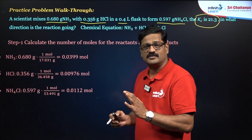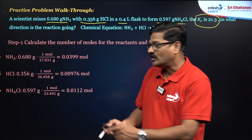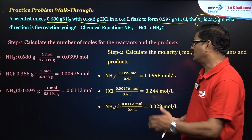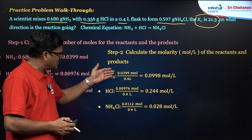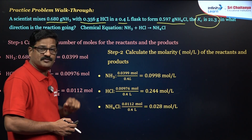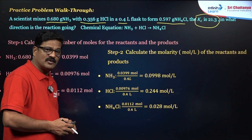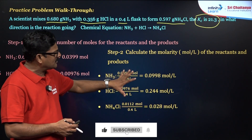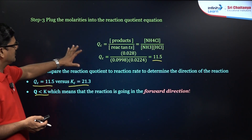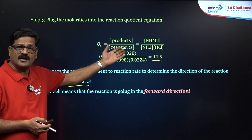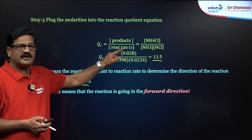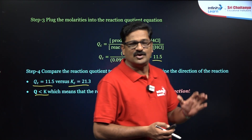To find active masses, calculate number of moles using: moles = given mass (g) ÷ molecular mass. Calculate moles of NH₃, HCl, and ammonium chloride. Then divide each by the volume (0.4 liters) to get the active mass in mol/L. Once you have active masses, plug them into the QC expression: QC = [NH₄Cl] ÷ ([NH₃] × [HCl]). This gives QC = 11.5.